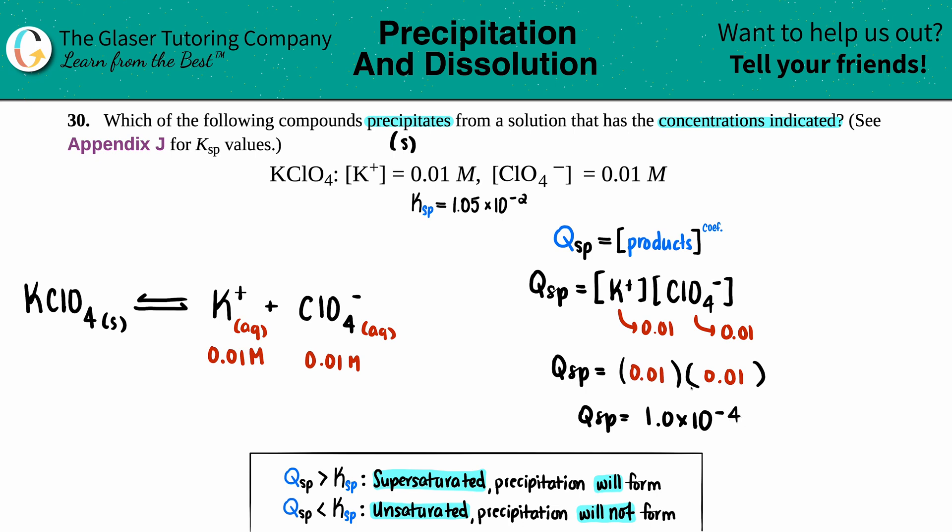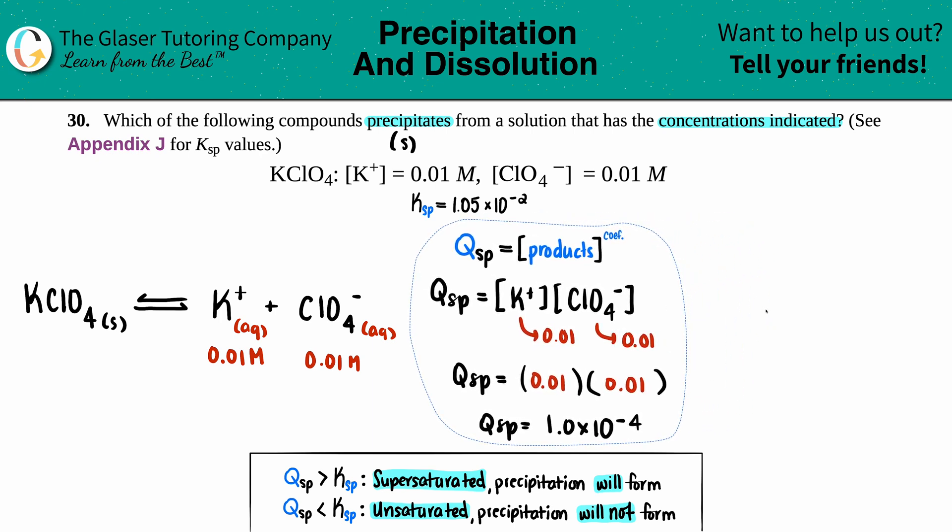Okay. Now all we have to do is we just have to take this Qsp that we found out and compare it to the Ksp, right? Because the Ksp is the known solubility product at equilibrium. So what I'm going to do is I'm just going to put my Qsp value on the left side and the Ksp value on the right side. The Qsp was 1.0 times 10 to the negative fourth. And the Ksp is 1.05 times 10 to the negative second.